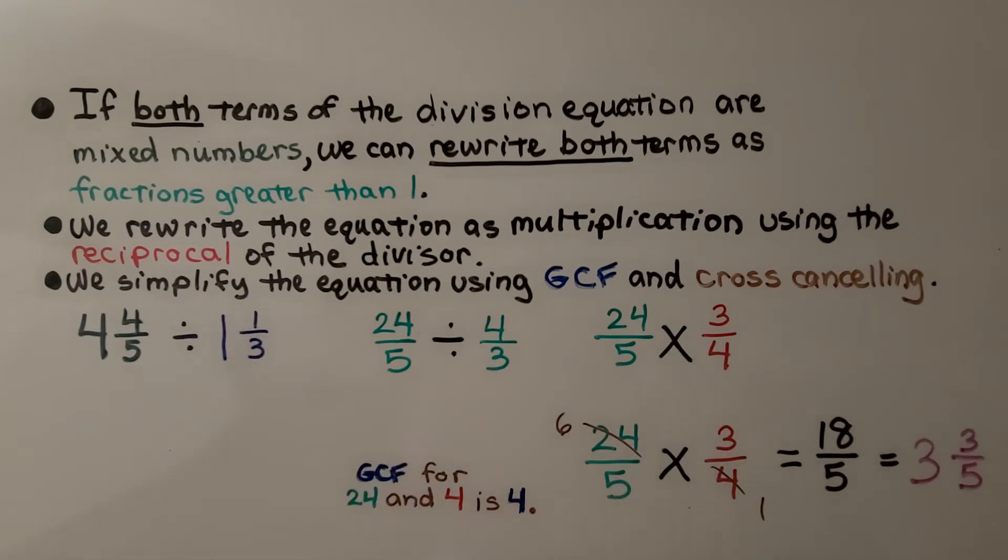Now we use the reciprocal of 4/3 as 3/4, we flip it around, and now we multiply instead of divide. Going across, 24 and 4 have 4 as their greatest common factor, so we simplify to 6 and 1.